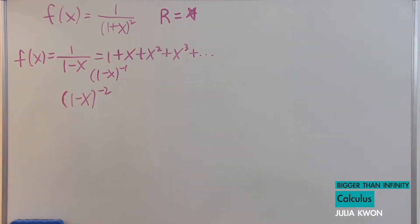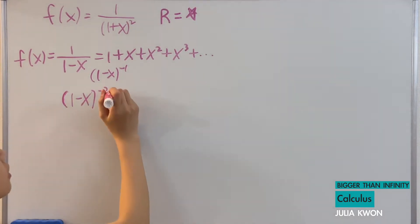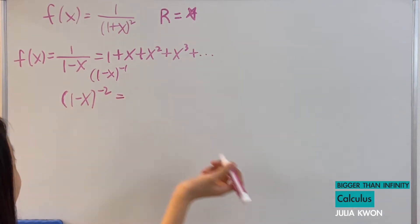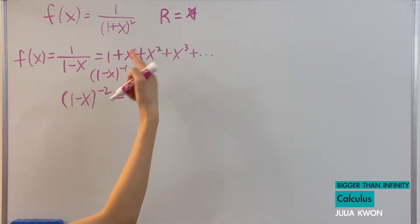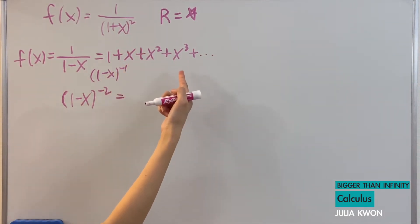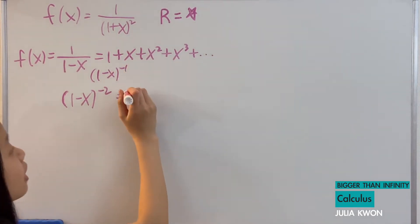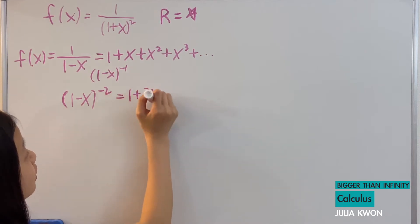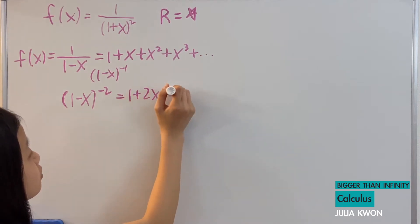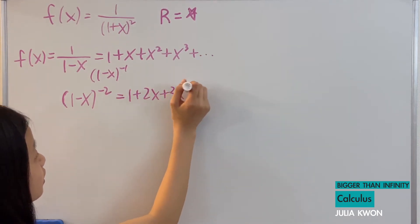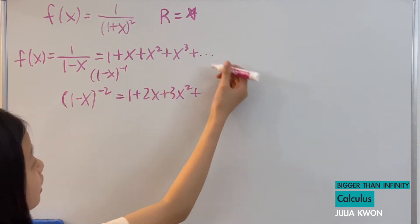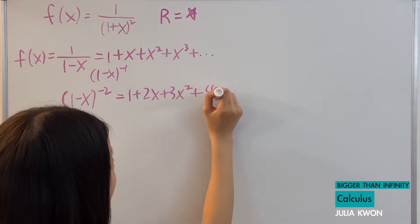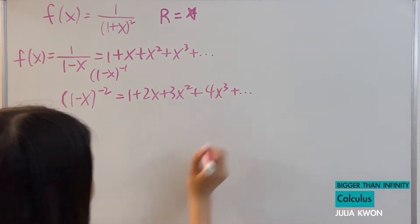And then on the right side, if we take the derivative, we would have 1 plus 2x plus 3x squared. And then we would have 4x to the power of 3 and so on.